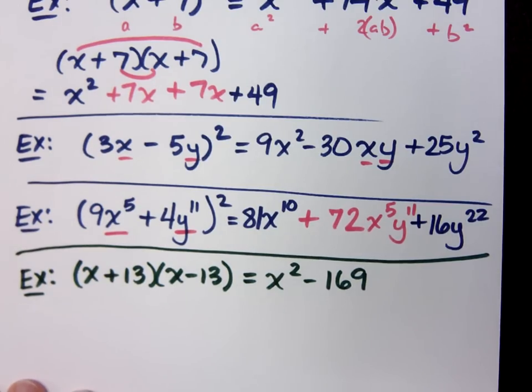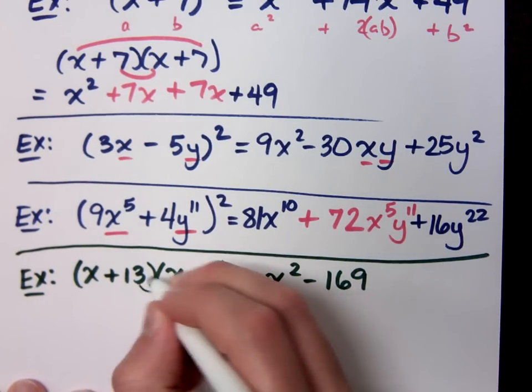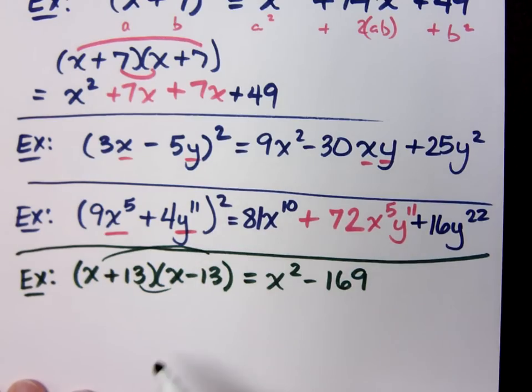You do the difference of those two squares. If you had multiplied this out, if you did the inside and the outside piece, what would have happened there? They would cancel.